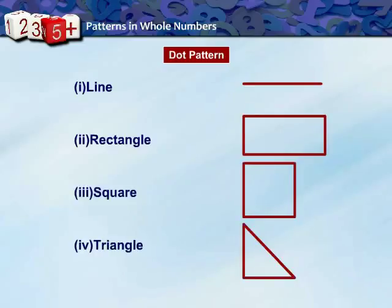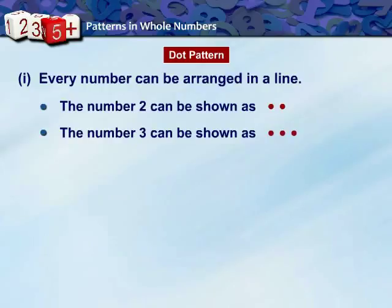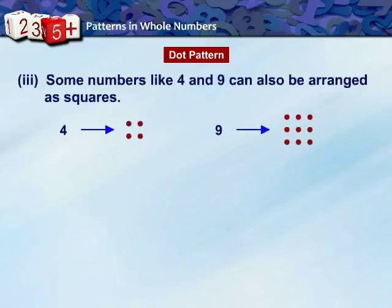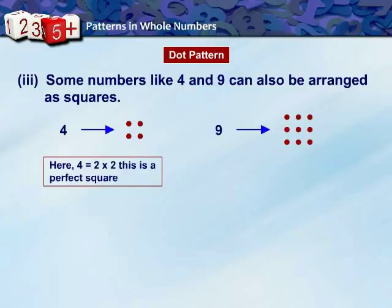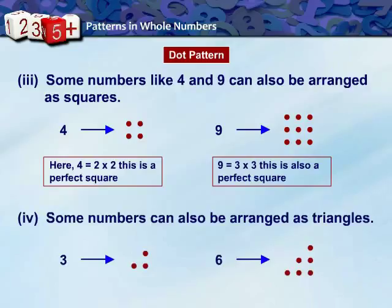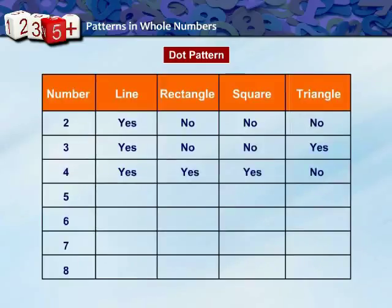Let's make patterns by arranging numbers in elementary shapes made up of dots — a line, a rectangle, a square, and a triangle. Every number can be arranged in a line. Some numbers can also be shown as rectangles, and numbers like 4 and 9 can be arranged as squares, since 4 = 2 × 2 and 9 = 3 × 3, making them perfect squares. Some numbers can also be arranged as triangles, with the two equal sides decreasing in dots from bottom to top. Observe the table and complete it on your own.